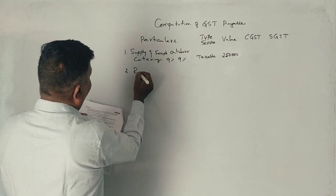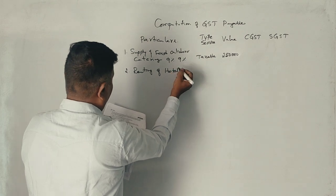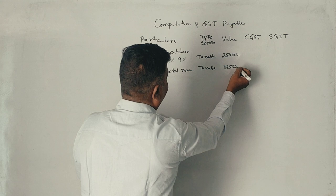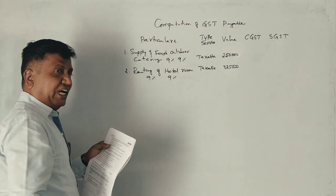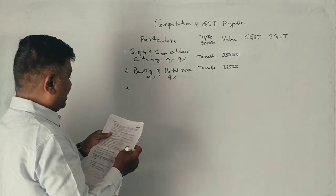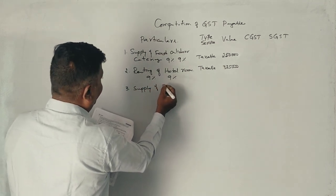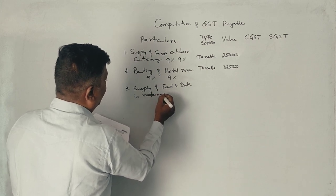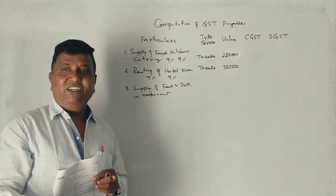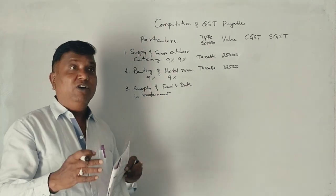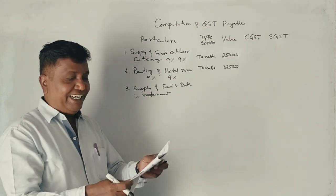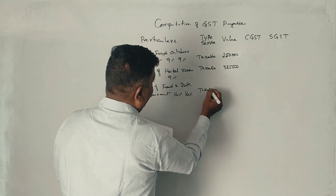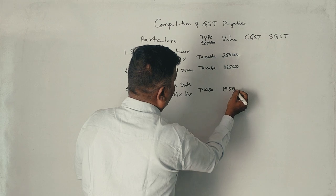Supply of food and drink in restaurant. It is a taxable service, so therefore 1,95,000 rupees.